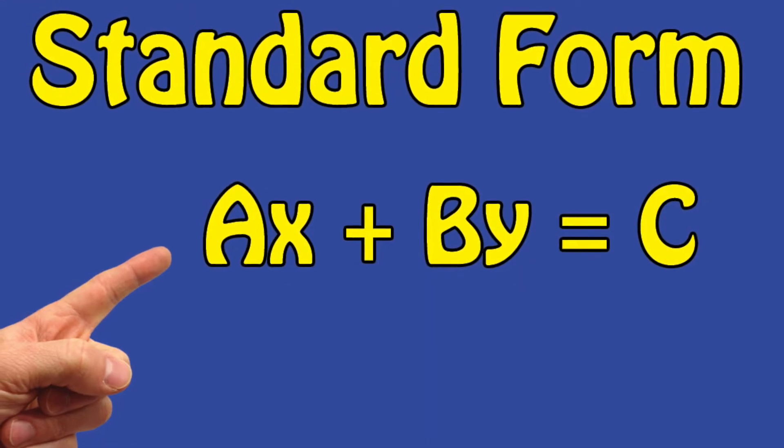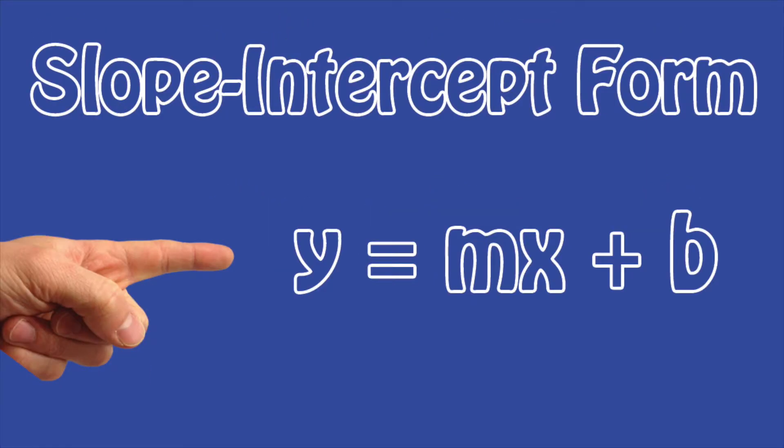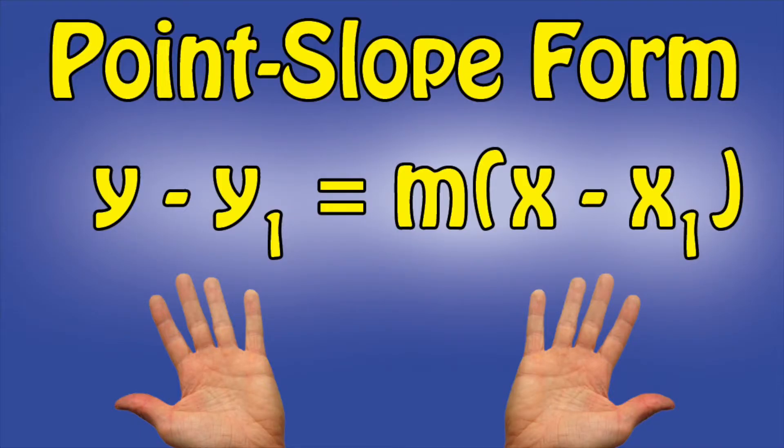Oh, we've got standard form: ax plus by equals c, slope-intercept form: y equals mx plus b, point-slope form: y minus y1 equals m times x minus x1.